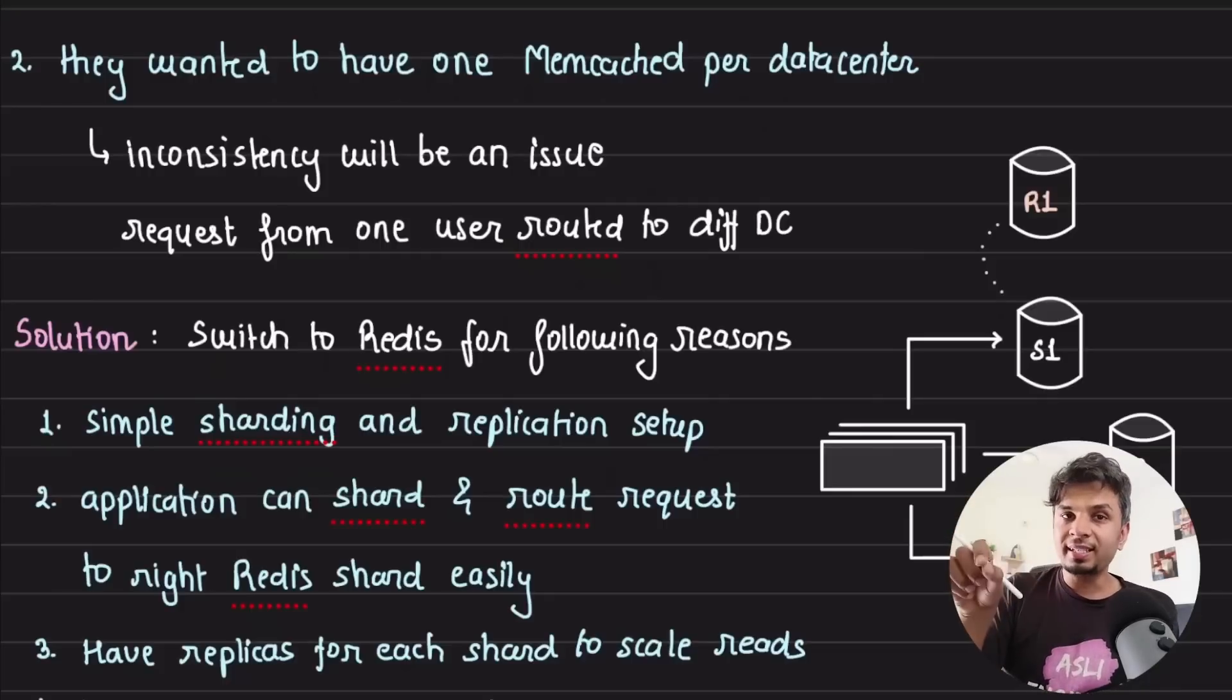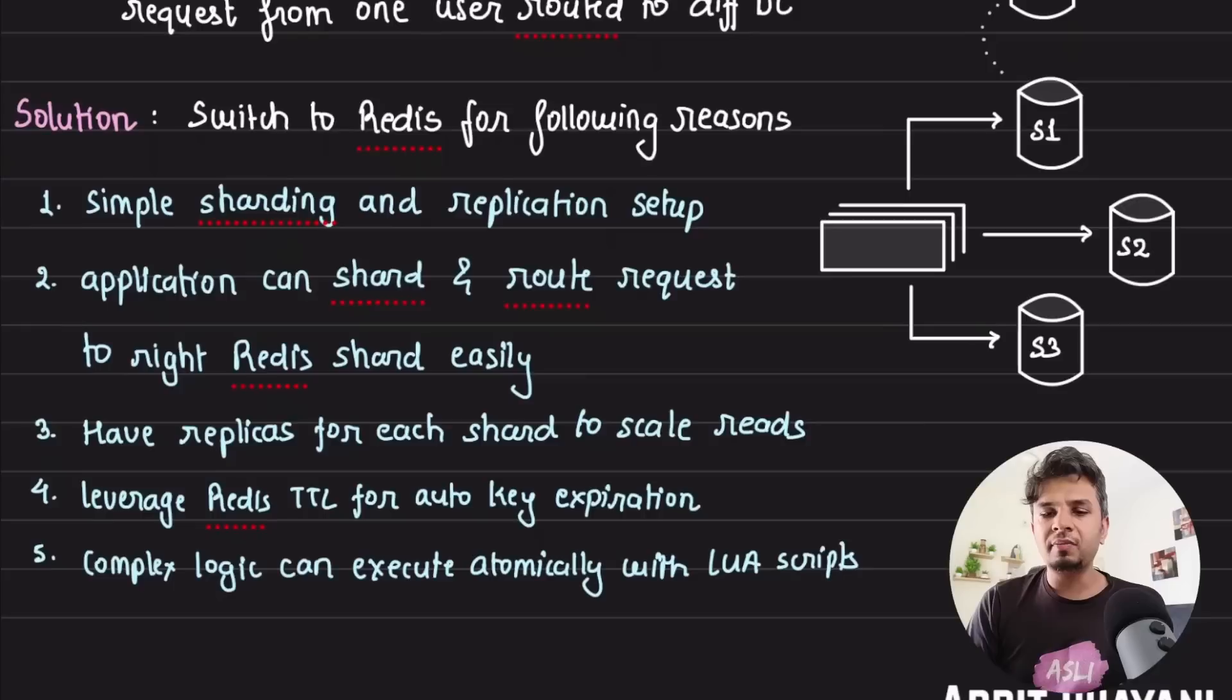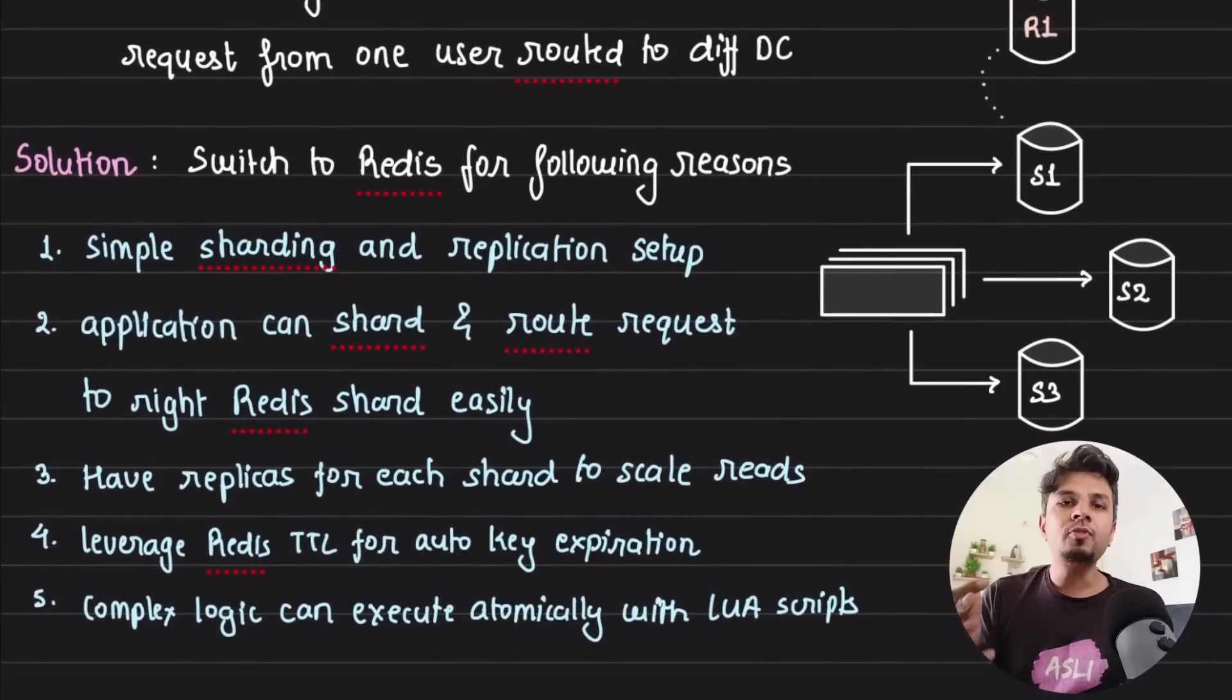But at this stage, they had a single Memcached cluster, so application servers present across different data centers used to connect to Memcached server present in that one data center. Obviously, they wanted to move and have a single Memcached server per data center. When this happens, you need to do sharding of application servers as well as Memcached cluster. That's why they said that now it's time for us to re-architect our rate limiting use case and evaluate if there is a better alternative, which is where they stumbled upon Redis.